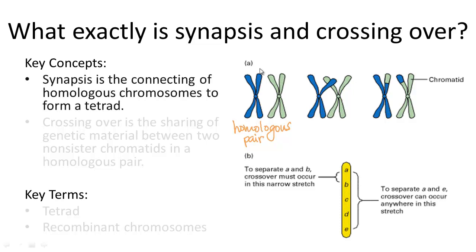Synapsis refers to the connecting of homologous chromosomes together. This connected pair forms what we call a tetrad — 'tetra' meaning four, referring to the four sister chromatids present: one, two, three, and four.